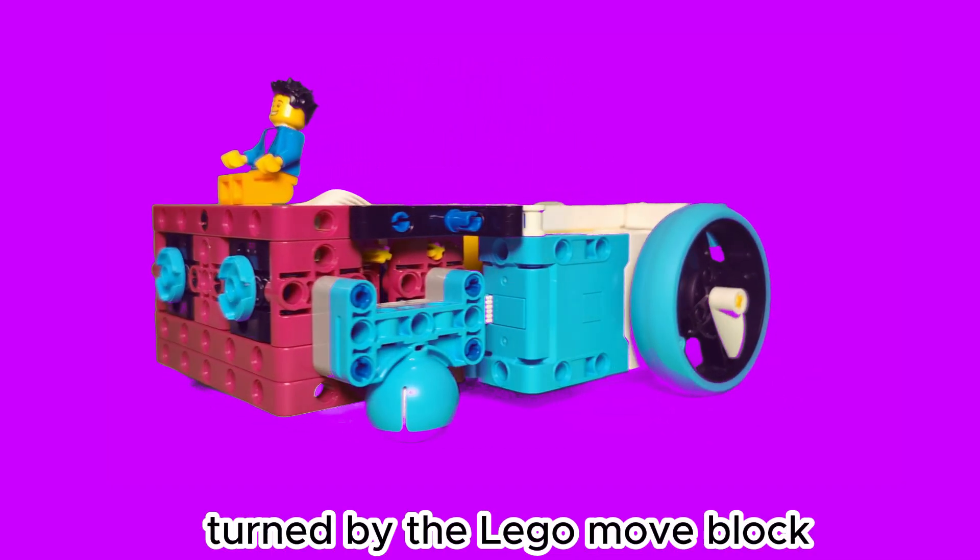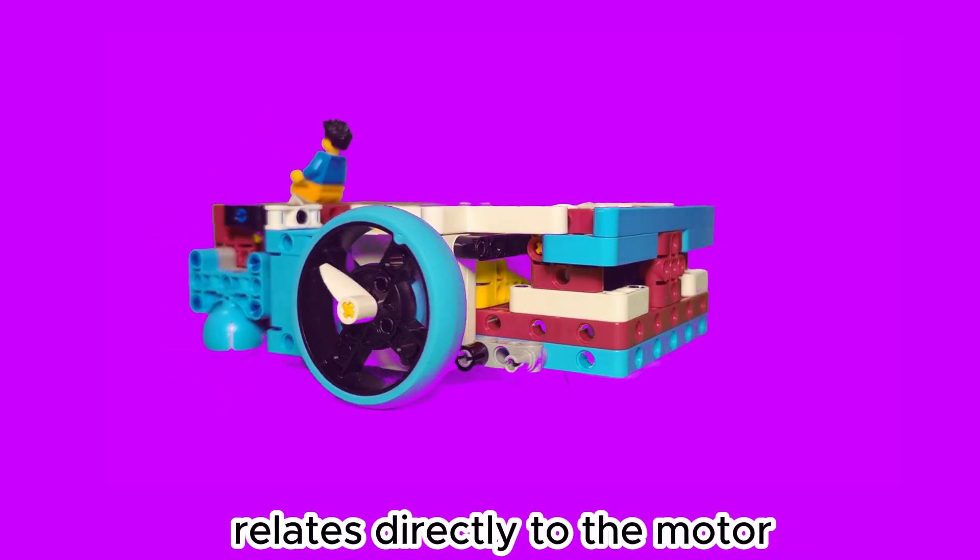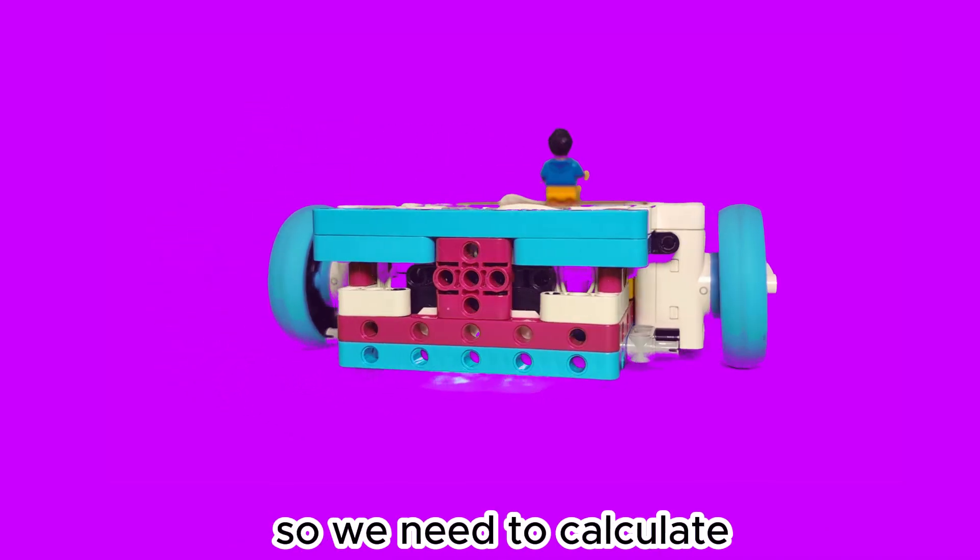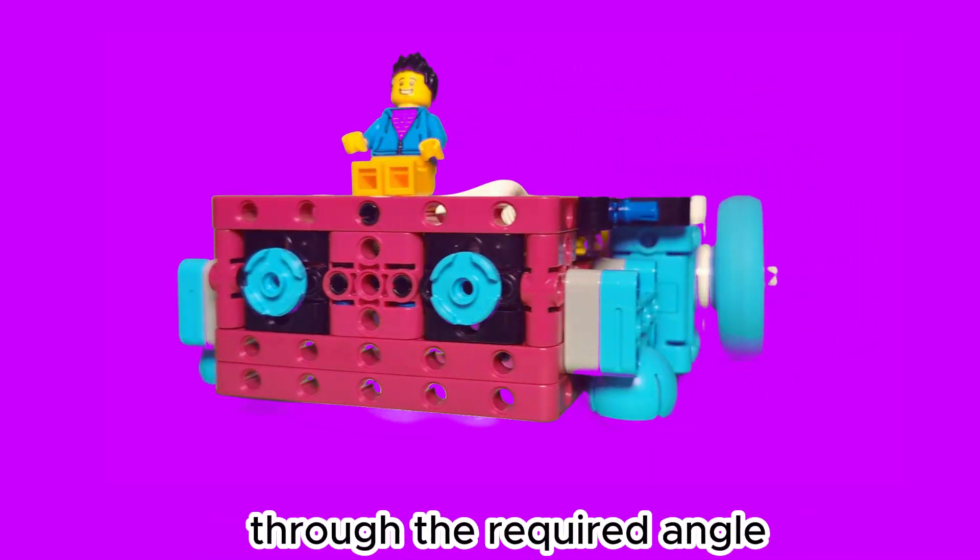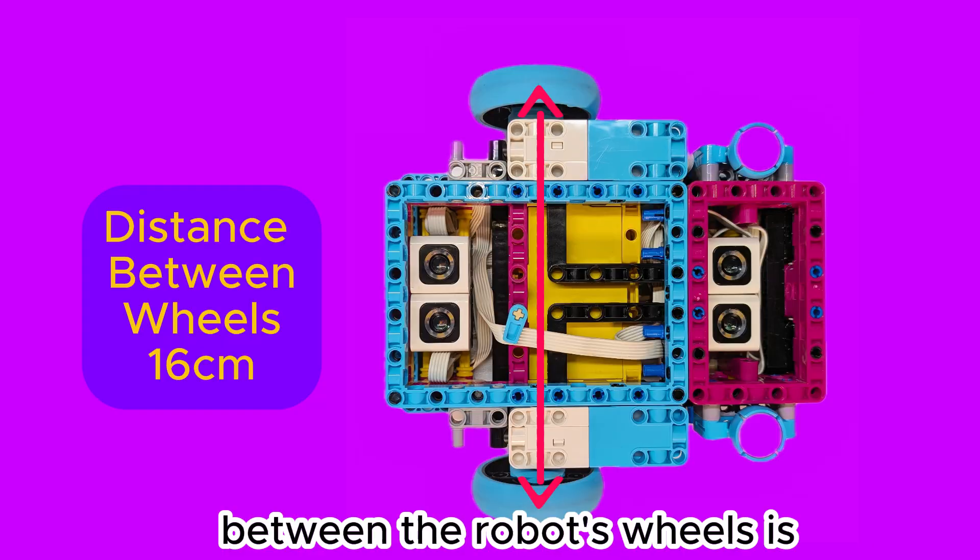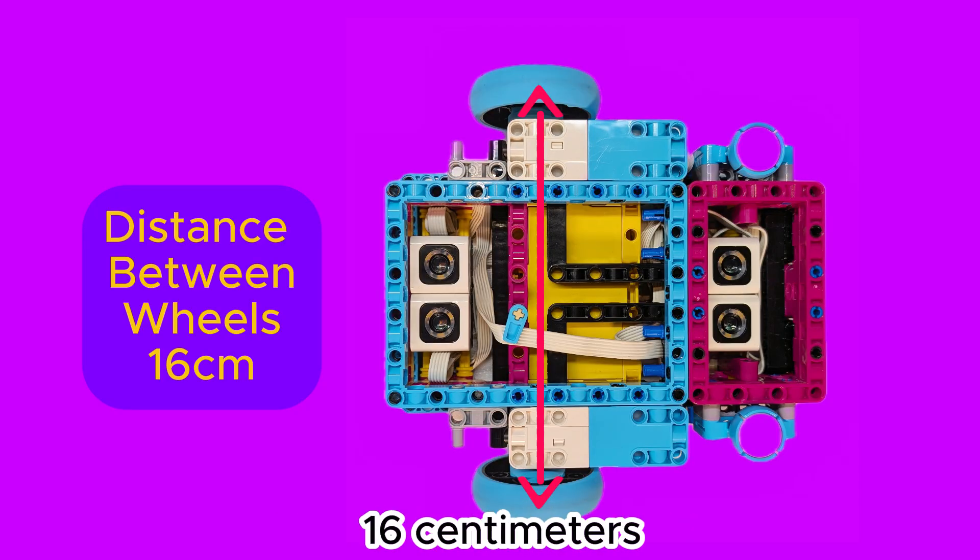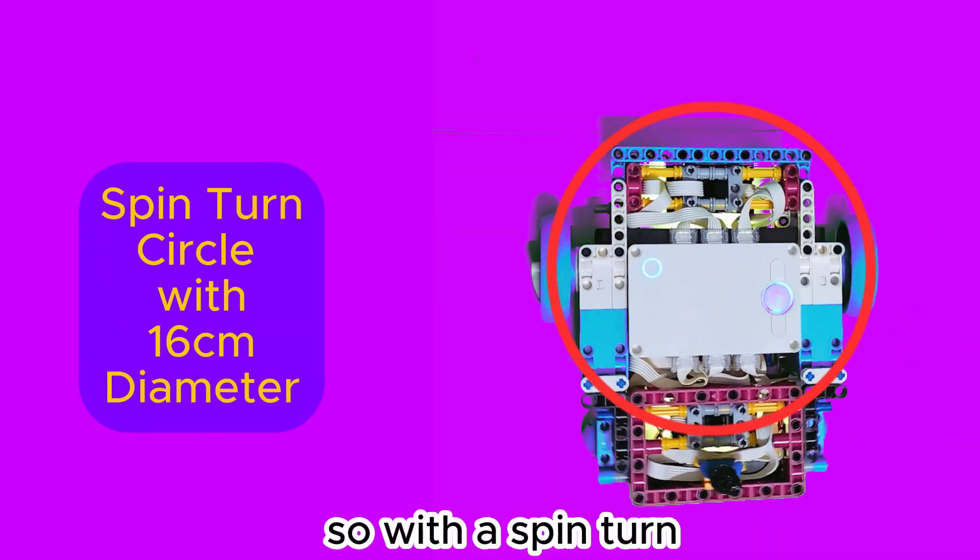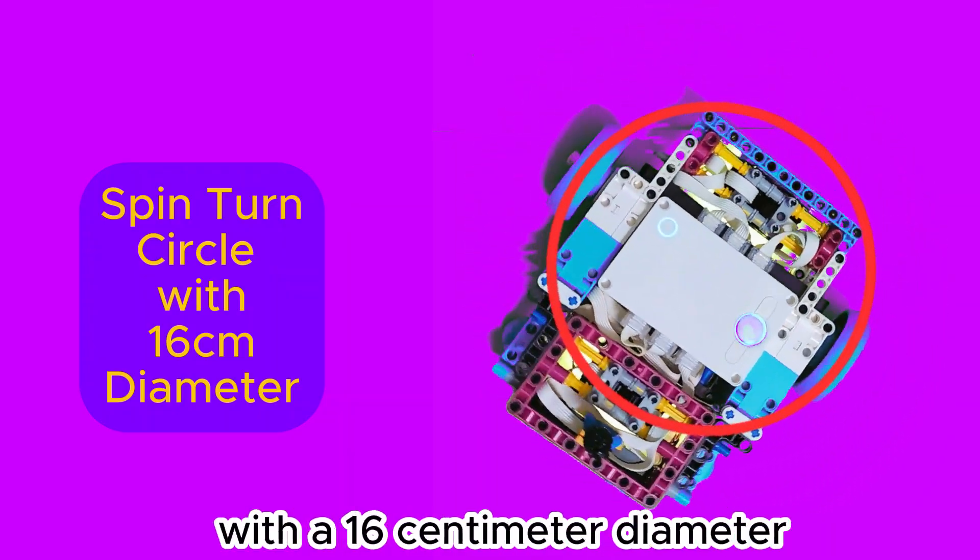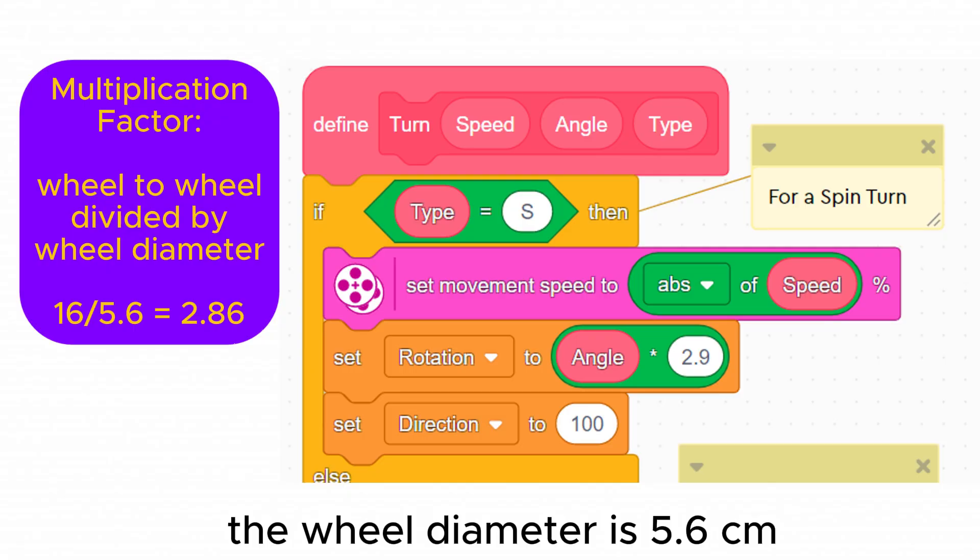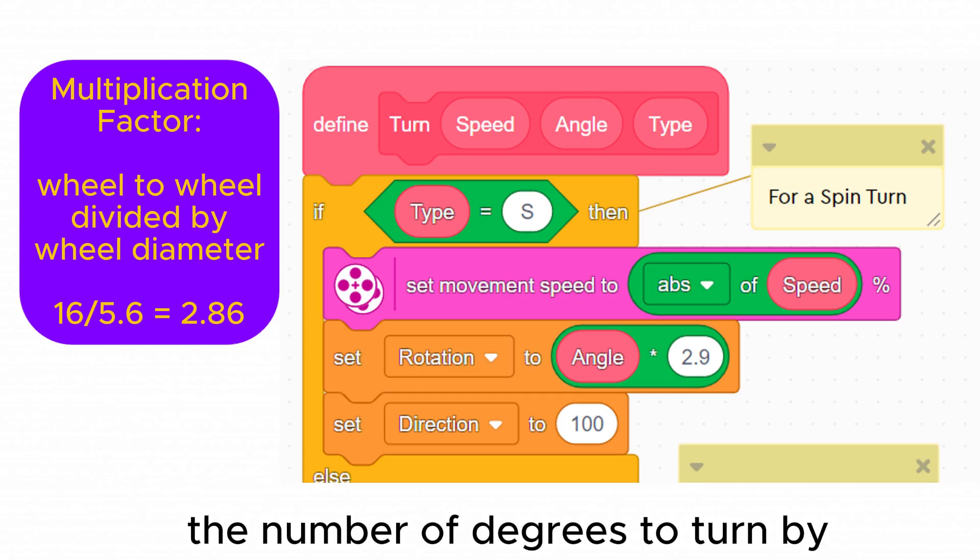The angle turned by the LEGO move block relates directly to the motor so we need to calculate how many degrees to turn the motor in order to turn the robot through the required angle. The distance between the robot's wheels is 16 centimeters. With a spin turn the robot travels in a circle with a 16 centimeter diameter. The wheel diameter is 5.6 centimeters so we need to multiply the number of degrees to turn by 16 divided by 5.6 which is 2.86.